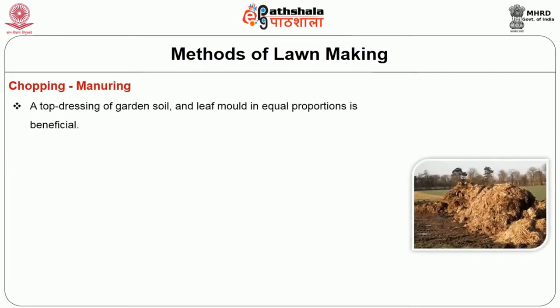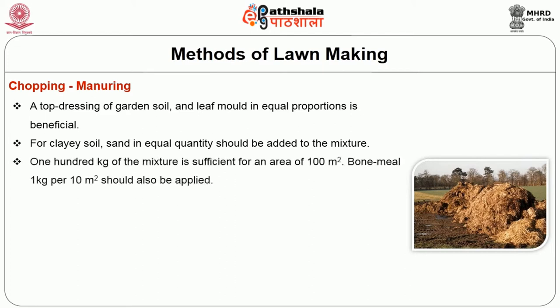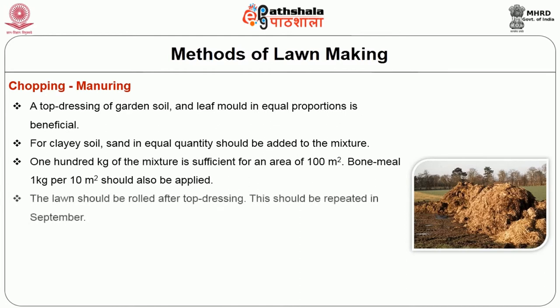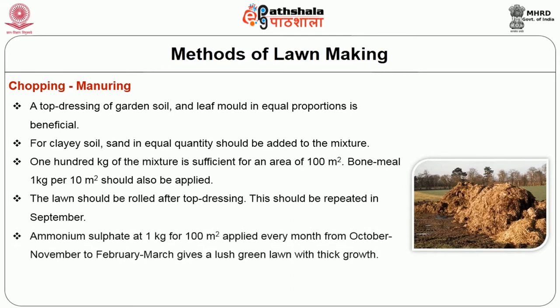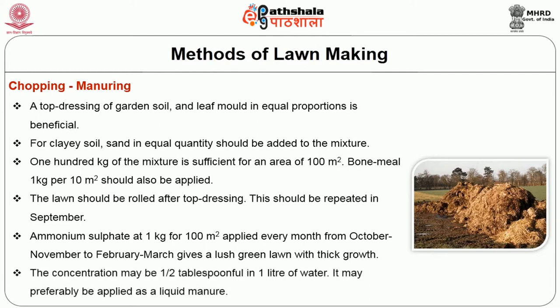Then manuring. Top dressing of garden soil and leaf mold in equal proportion is beneficial. For clayey soil, sand in equal quantity should be added to the mixture. 100 kg of mixture is sufficient for an area of 100 m². Bone meal at 1 kg per 10 m² should also be applied. The lawn should be rolled after top dressing. This should be repeated in September. Ammonium sulphate at 1 kg for 100 m² should be applied every month from October to November or February to March to ensure a lush green lawn with thick growth. It may preferably be applied as a liquid manure.